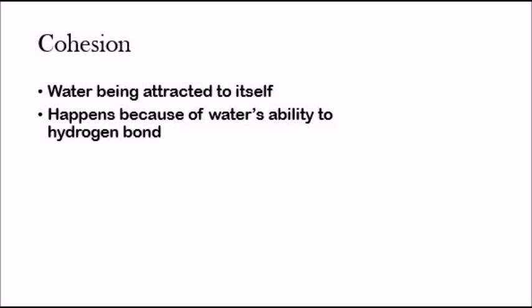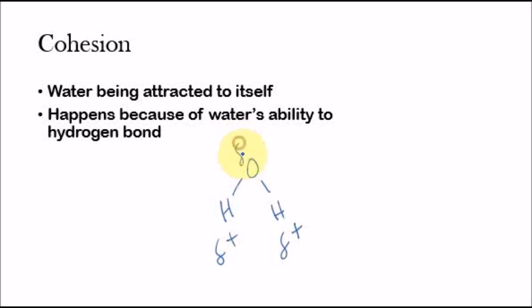So basically what happens in cohesion is that you see water molecules being attracted to itself. You can have one water molecule, and the hydrogen atoms within the water molecule have a partial positive charge, and the oxygen atom has a partial negative charge — I described how this happens in previous videos, so you can go check that out. And then there'll be another water molecule, and they'll be attracted because of a hydrogen bond.